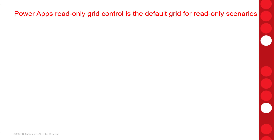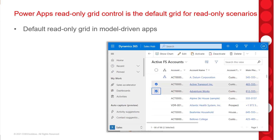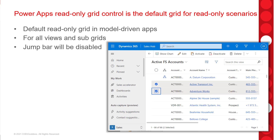The Power Apps Read Only Grid Control was released during 2021 Wave 2, and the change here is that this grid will be the default read-only grid in model-driven apps. This means it will be used for all views — all page views and all subgrid views in Dynamics 365. This is important to know because this grid actually disables the jump bar, which is on the bottom of views — those letters that we used to see on the bottom of those views.